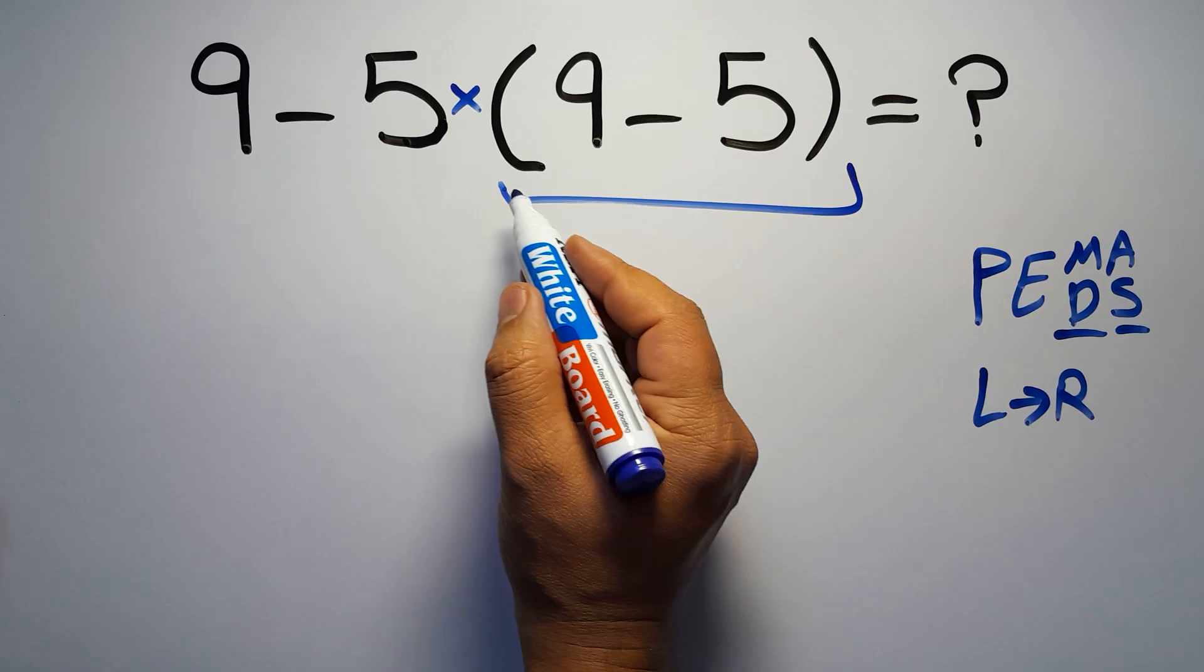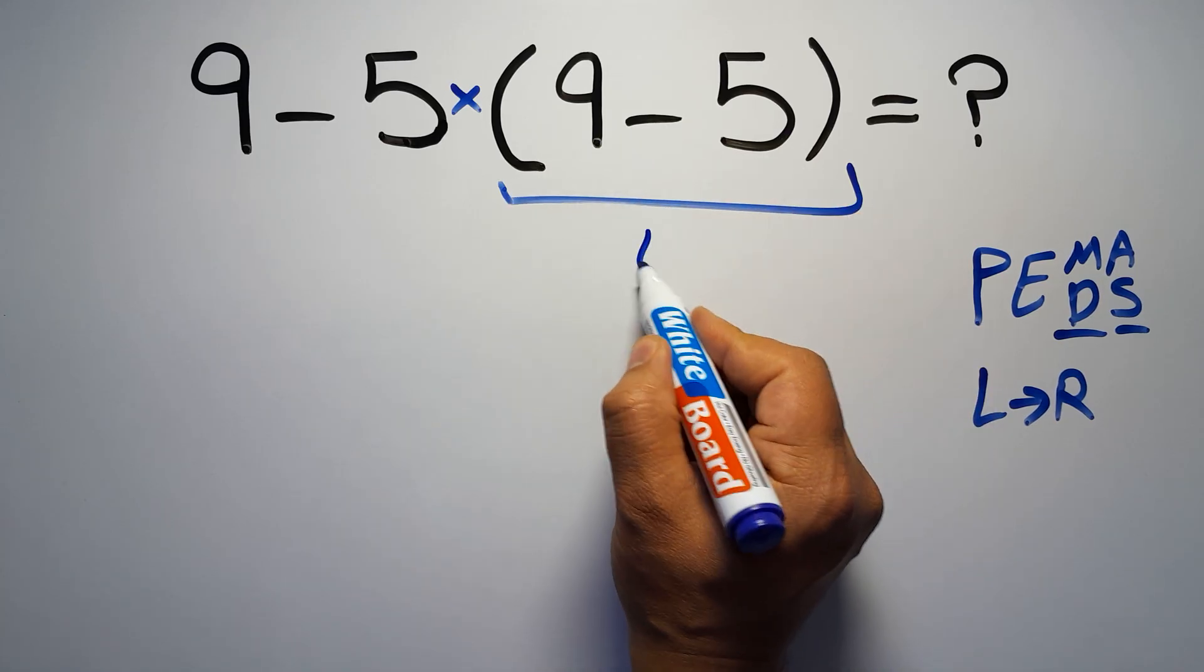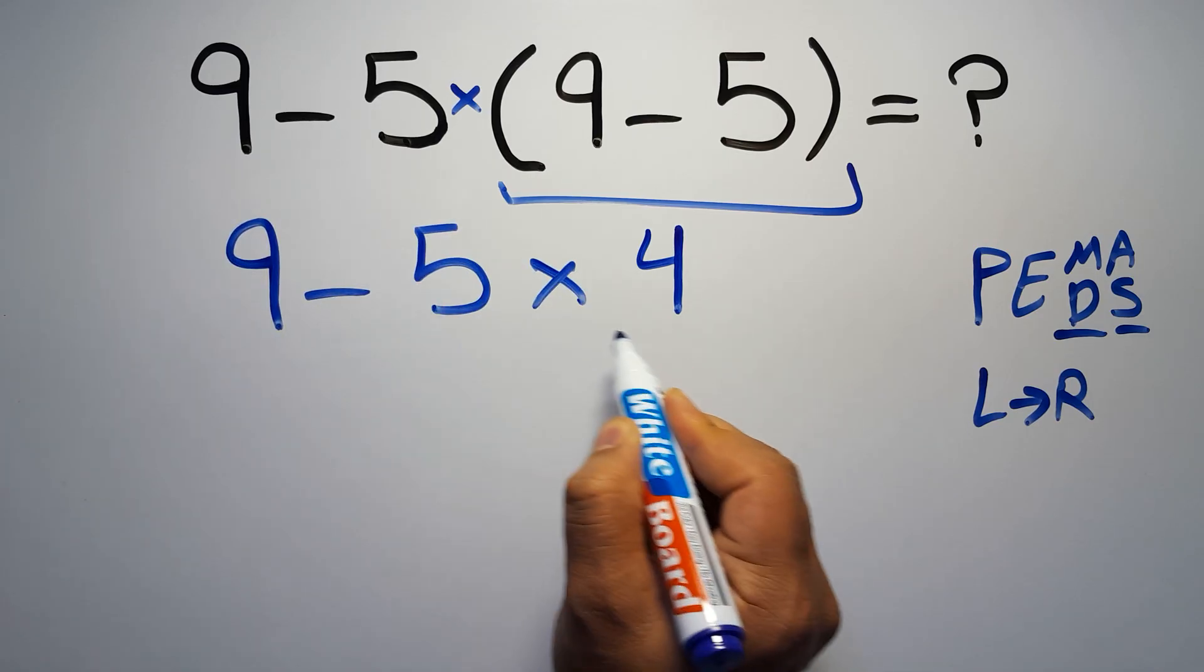So first we have to do this parentheses. Inside this parentheses we have 9 minus 5 which equals 4. So 9 minus 5 times 4.